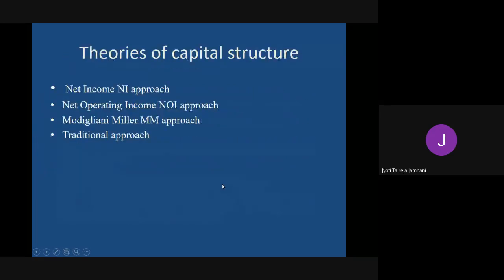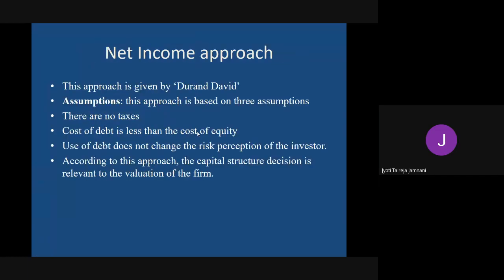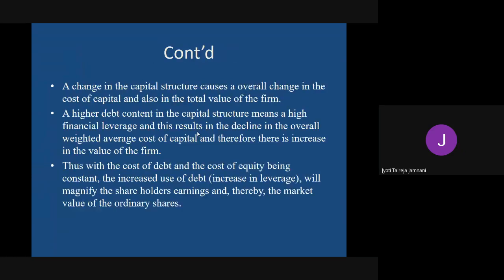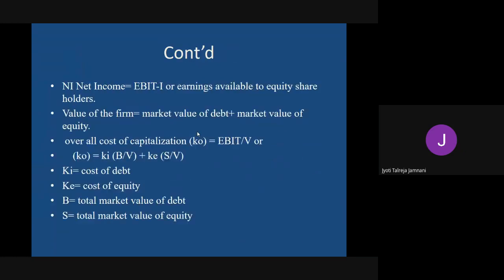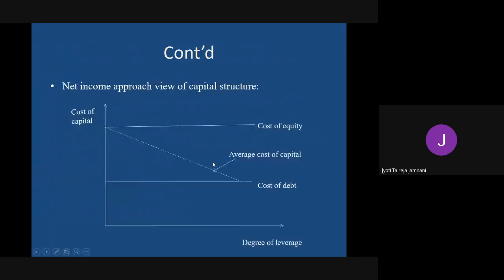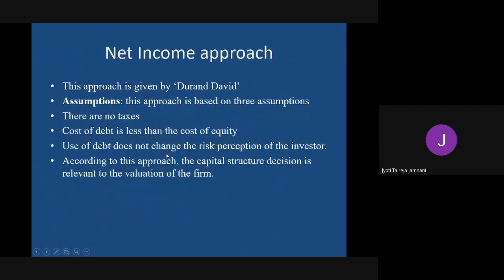These were the basic assumptions applicable to all capital structure theories. The four theories we will study are: Net Income, Net Operating Income, Modigliani-Miller, and Traditional. In tomorrow's class, we will start with the Net Income approach theory. It is very important to understand the theory and note down the formulas, after which we will spend about half an hour on problems.